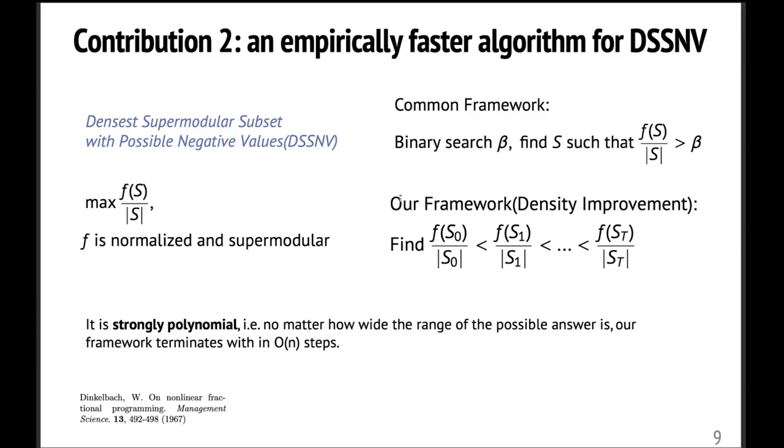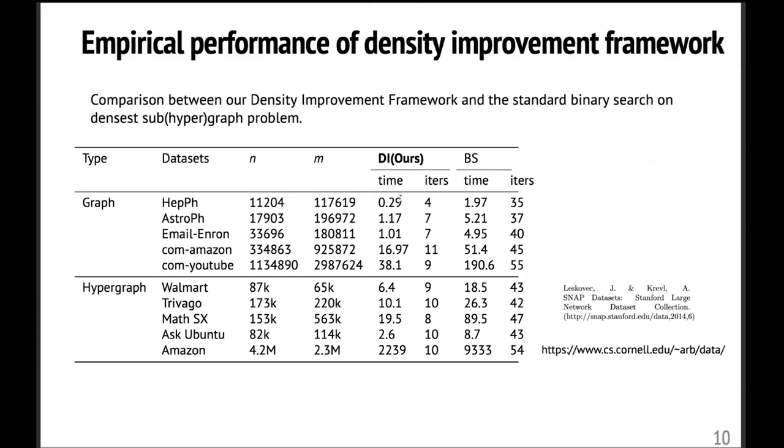Although this boundary may look really bad, but in practice, it converges very quickly. So here we provide some empirical performance study. So we pick two special cases of DSSNV, the most classical ones, the densest subgraph and the densest subhypergraph. And we run them on five graphs and five hypergraphs. We compare our density improvement framework with a standard binary search. And we can see on all the graphs and hypergraphs, our framework will take less wall time and the number of subproblems it requires to solve is also much smaller.